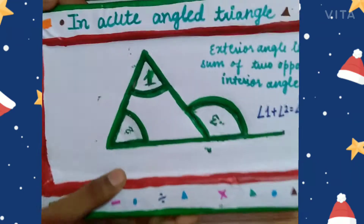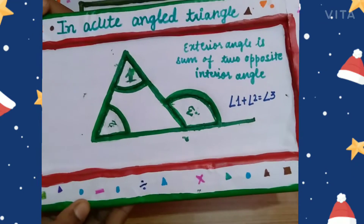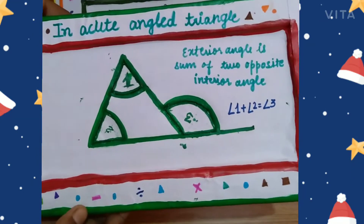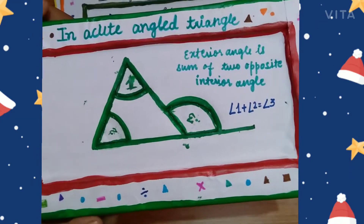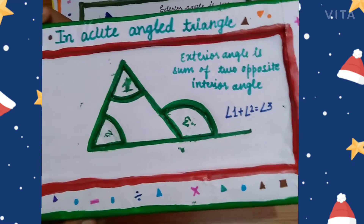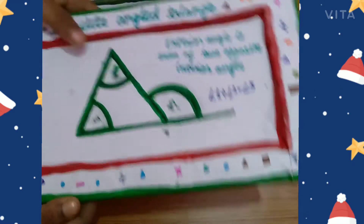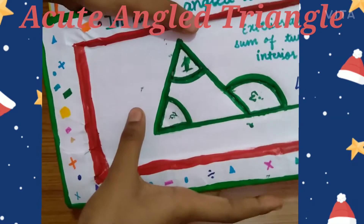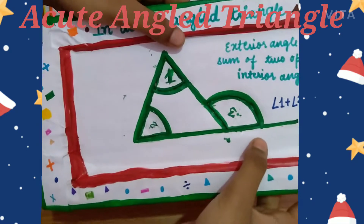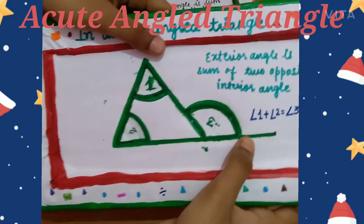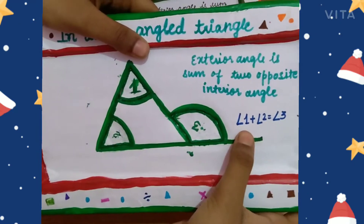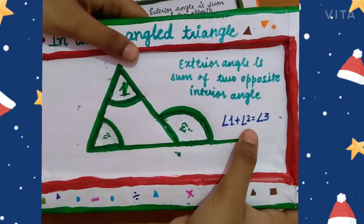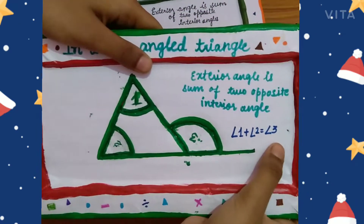This model shows that the exterior angle is the sum of two opposite interior angles. Look, these are interior angles and this is the exterior angle. Angle 1 plus angle 2 equals angle 3.